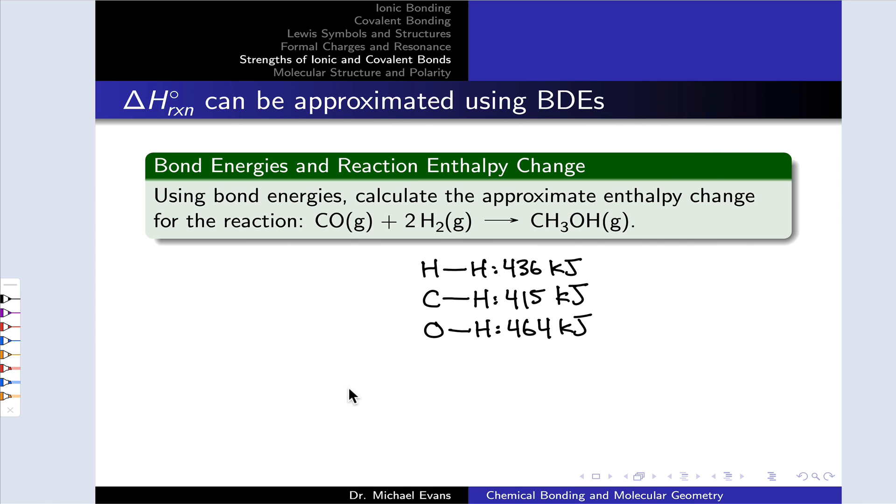Let's work a practice problem now where we apply this idea of using bond dissociation energies to calculate a reaction enthalpy. The idea is to use the bond energies given here to calculate the approximate enthalpy change for this reaction: CO gas plus 2H₂ gas goes to CH₃OH, which is methanol. So we've got carbon monoxide reacting with hydrogen gas to form methanol. Now the first thing we want to do here is lay down Lewis structures for all the reactants and all of the products. This makes it much easier to see which bonds are made and broken, and it's really a required step.